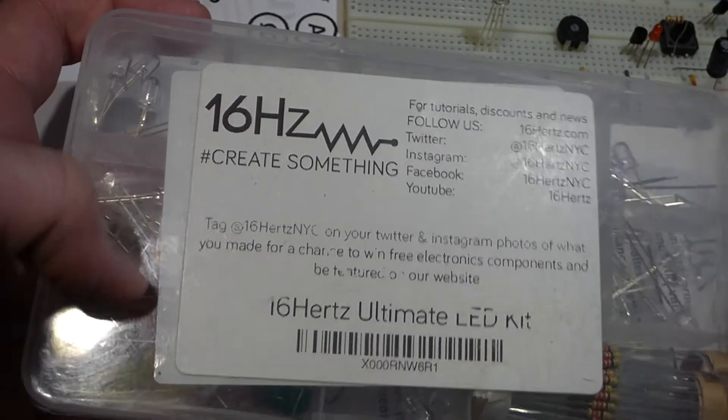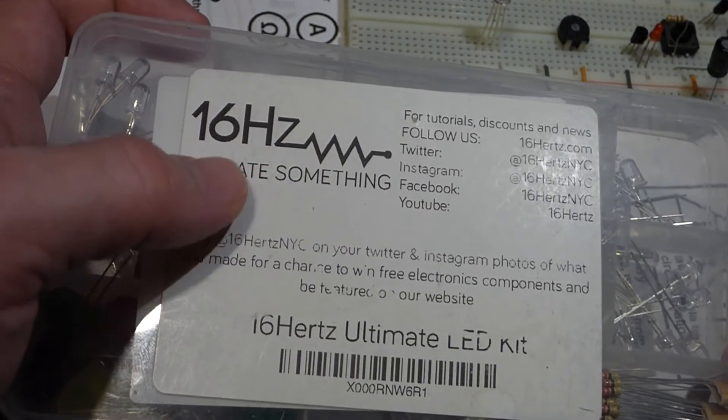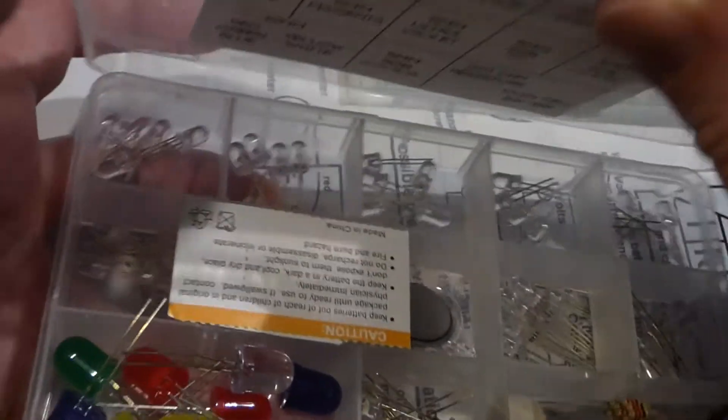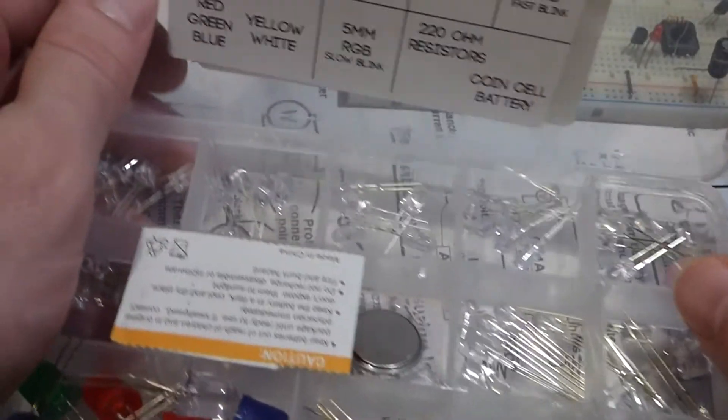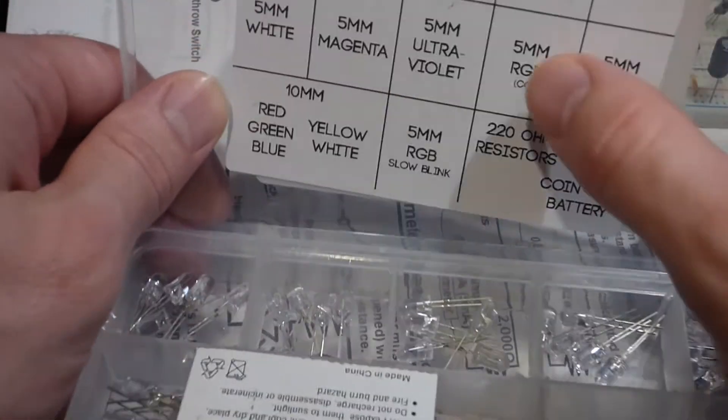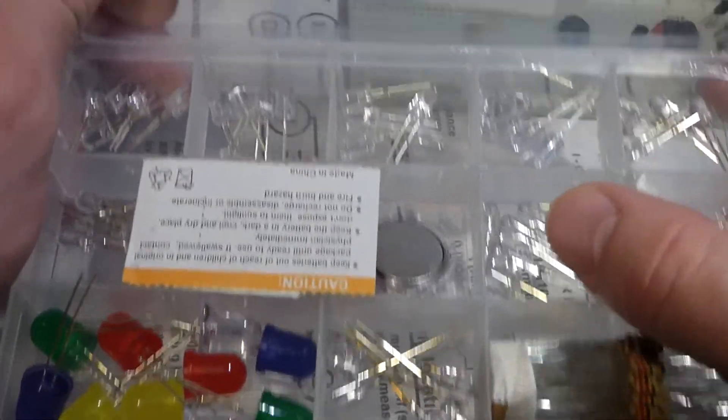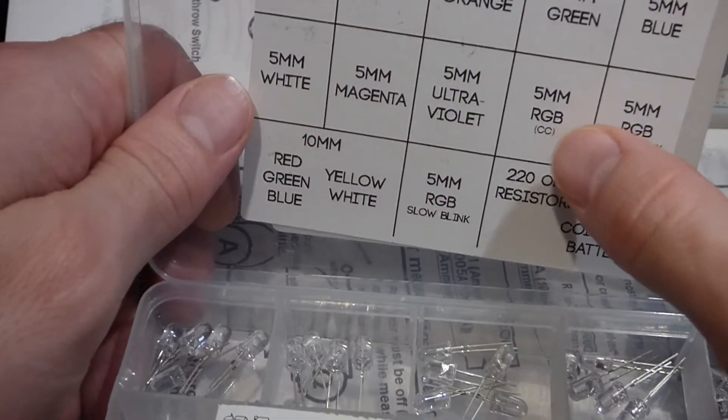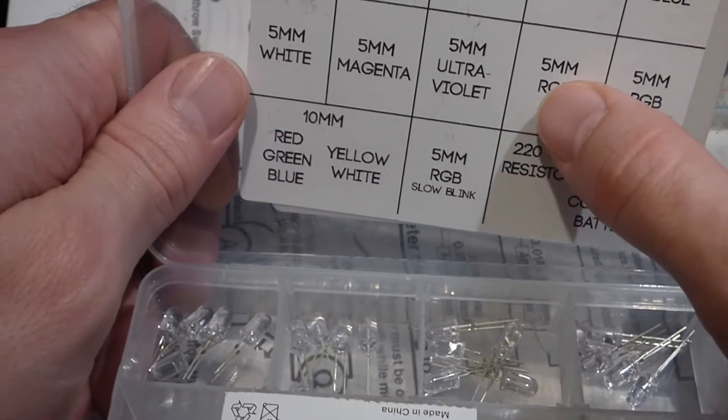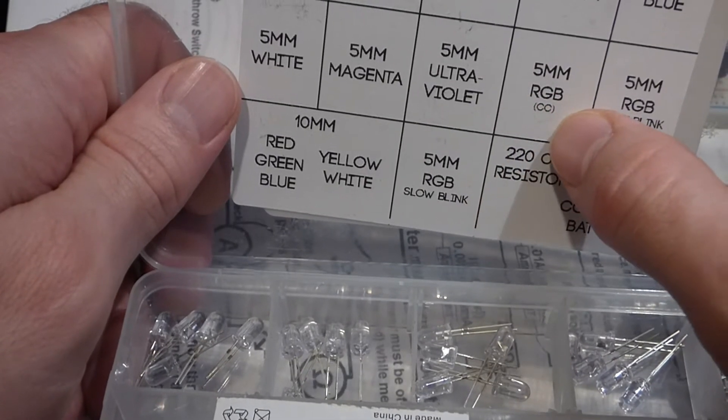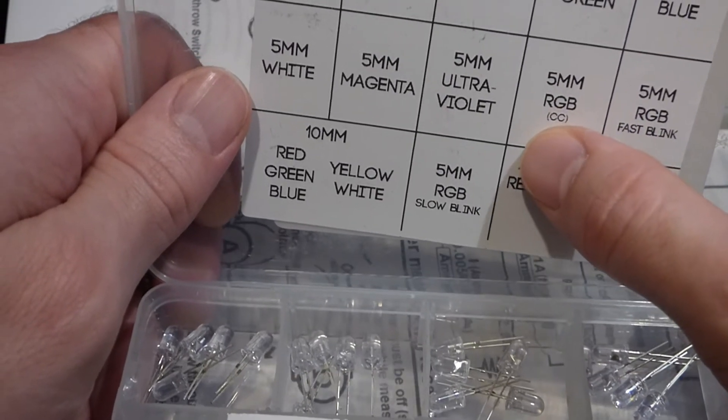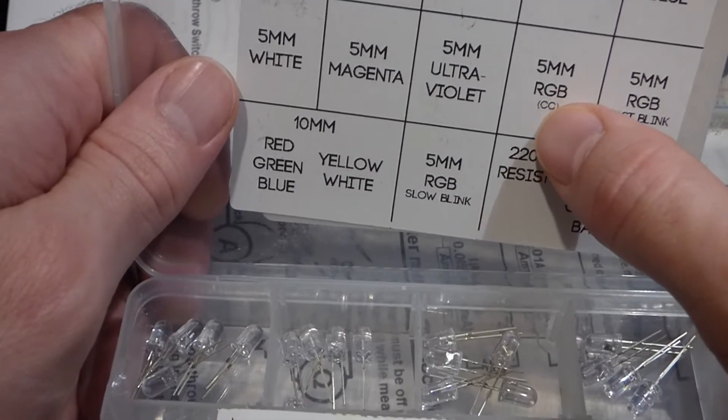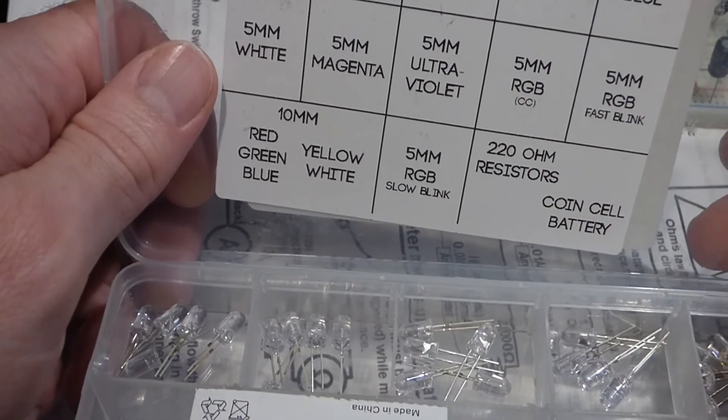I got the red green blue LEDs from this kit, 16 hertz kit. It looks like there's a lot better kits out there, but this was the one I got a while ago. You can see we got it labeled here. In this box we have the 5mm red green blue. And then this CC stands for common cathode. If it was listed CA that would be common anode.